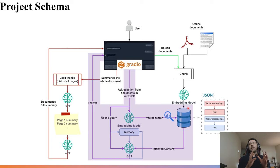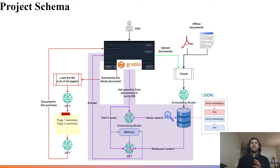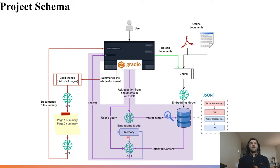After preparing the vector database, the chatbot pipeline works as follows: a user question passes to an embedding model, performs a vector search on the database, retrieves some content, then prepares an input for the language model — which includes the model instruction, retrieved content, the user's question, and a chat history for better user experience. The LLM then provides the final response.